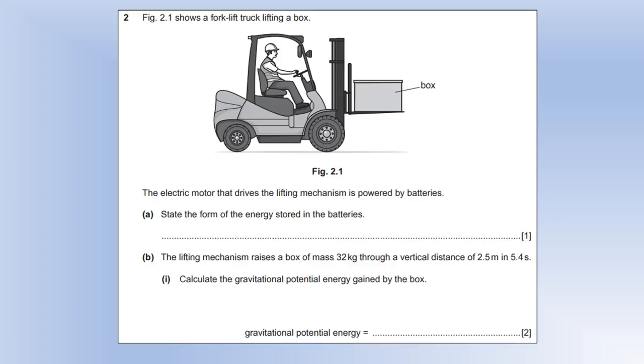So moving on to a different question concerning a forklift truck lifting a box. It's lifted using an electric motor powered by batteries. What form of energy is stored in batteries? Well, it's chemical potential energy. Now we need the word potential in there because it's a form of stored energy, so we should be calling it potential energy.